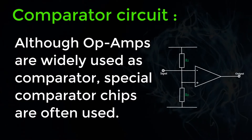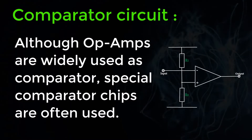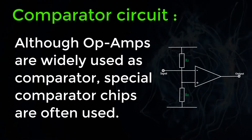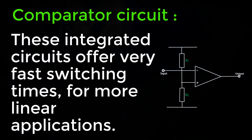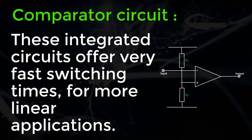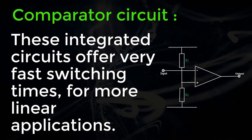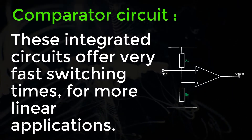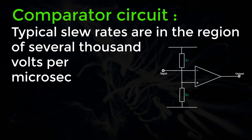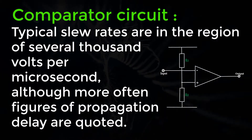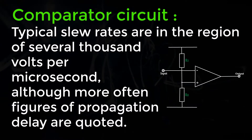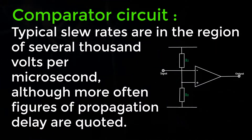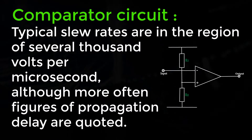Comparator circuit. Although op-amps are widely used as comparators, special comparator chips are often used. These integrated circuits offer very fast switching times, above those offered by most op-amps intended for linear applications. Typical slew rates are in the region of several thousand volts per microsecond, although more often figures of propagation delay are quoted.